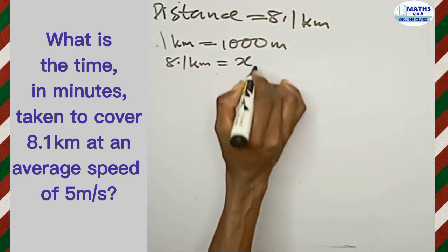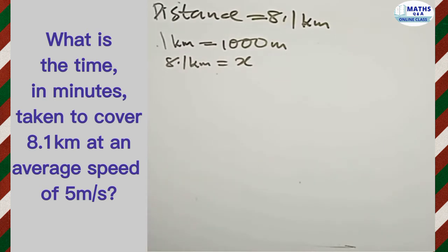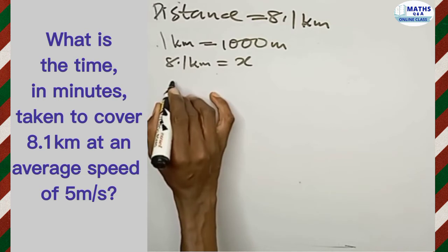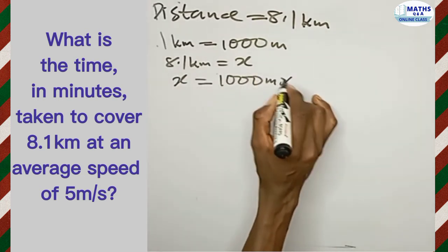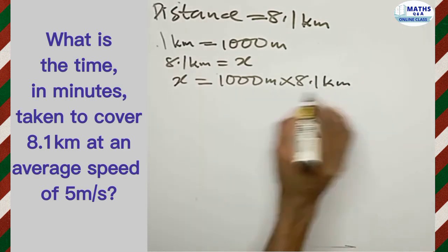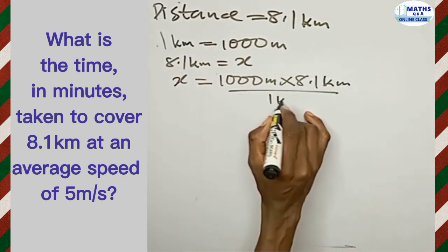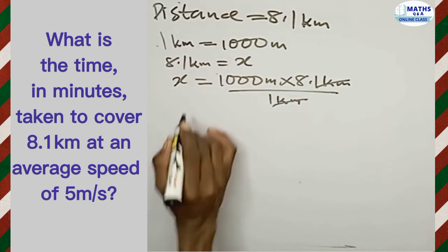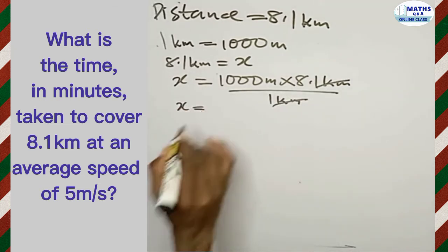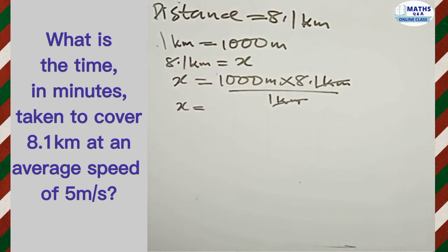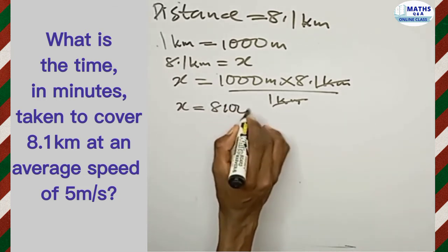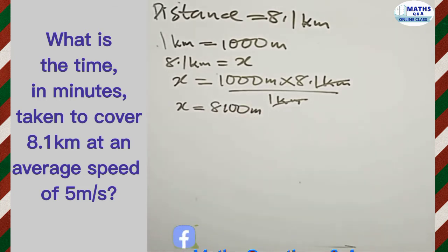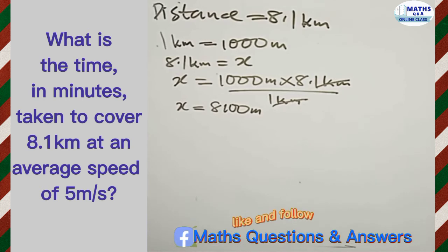...we do cross multiplication. The value gives us one thousand meters multiplied by 8.1 kilometers, divided by one kilometer — so the kilometers cancel out. 8.1 kilometers is now equal to eight thousand one hundred meters.